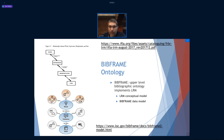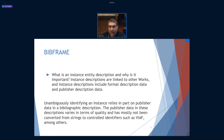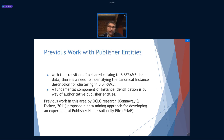Referencing these is an important way for implementing descriptions that make our data more easily discoverable. In the ShareVDE catalog, we have works and instance descriptions. Instances are important because they include format and publisher data, and unambiguously identifying an instance relies in part on having publisher data in a bibliographic description. The data quality varies — publishers have mostly been entered as strings and are not necessarily controlled identifiers yet, or they're in the process of transitioning from publisher strings into entity-based cataloging.